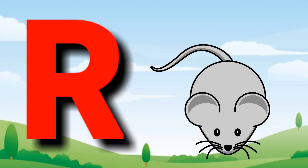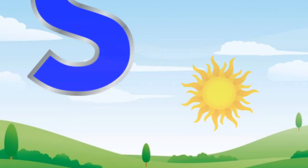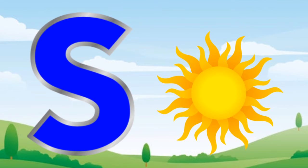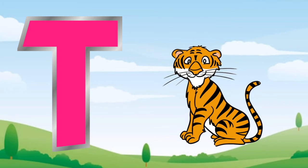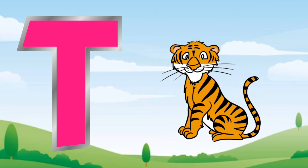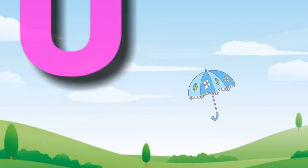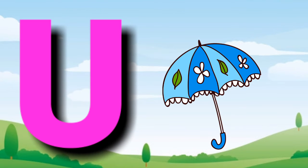R for red, S for sun, T for tiger, U for umbrella.